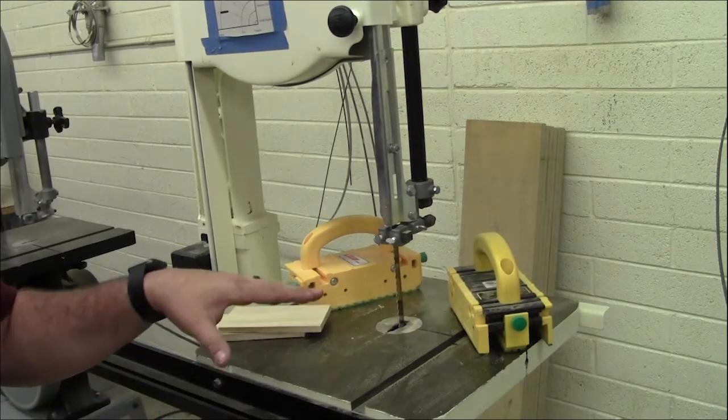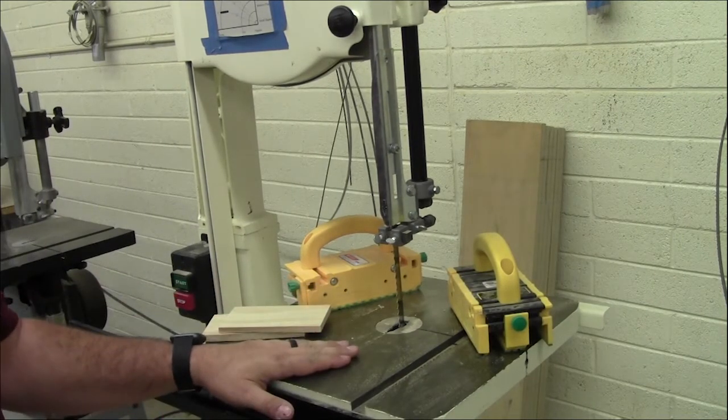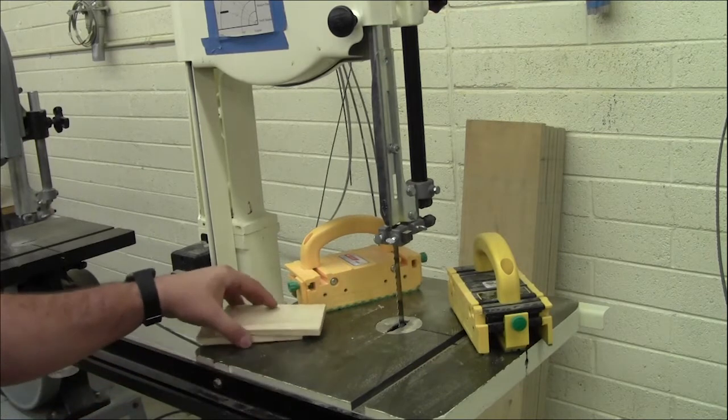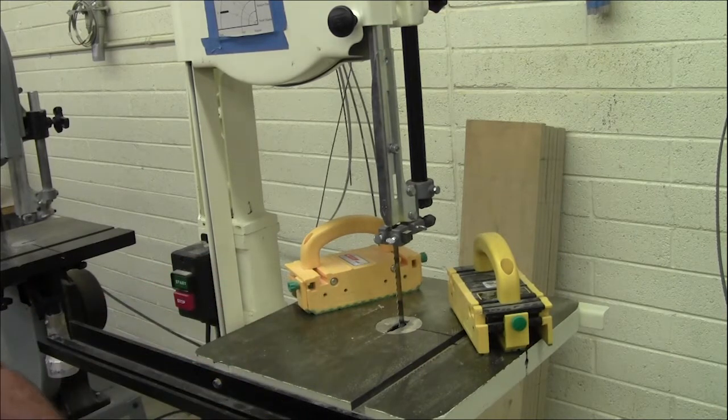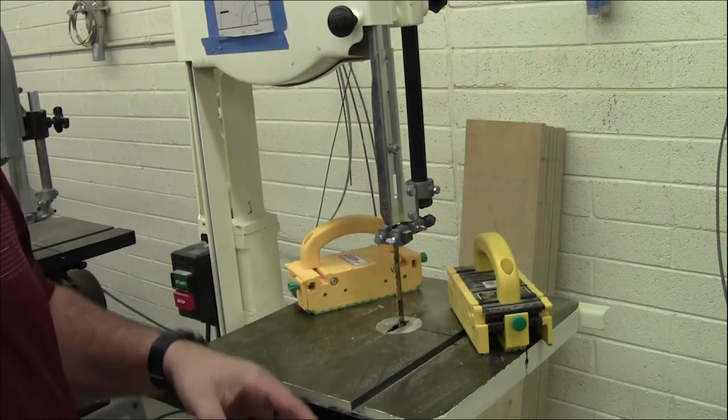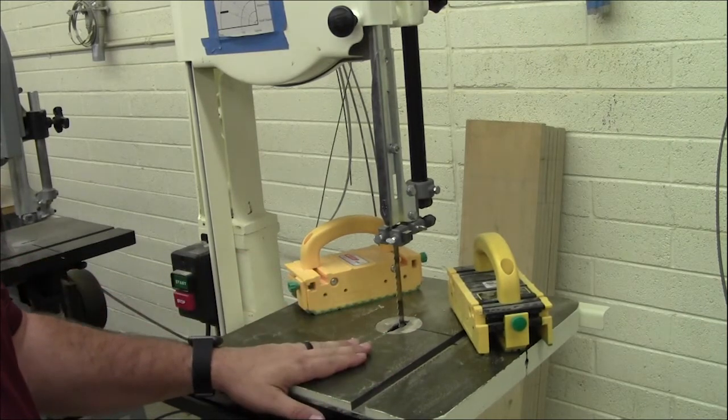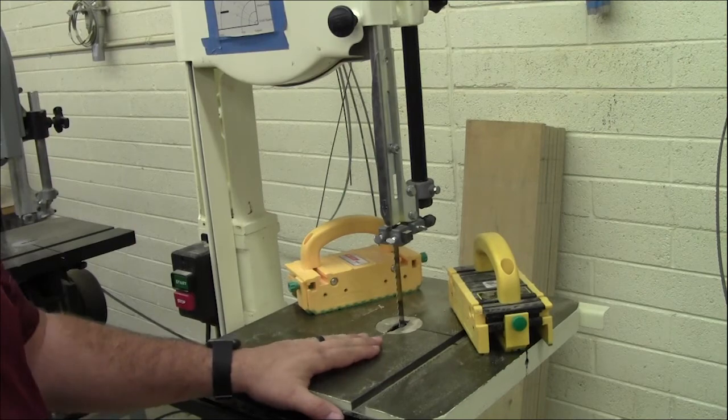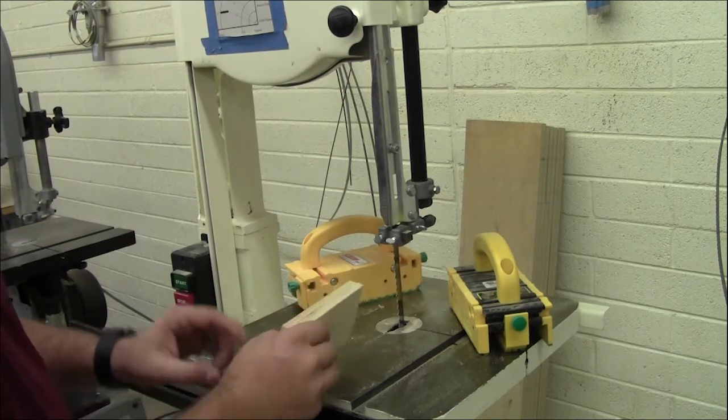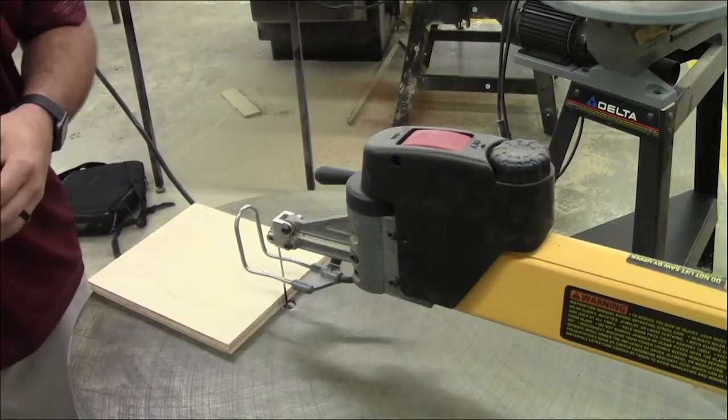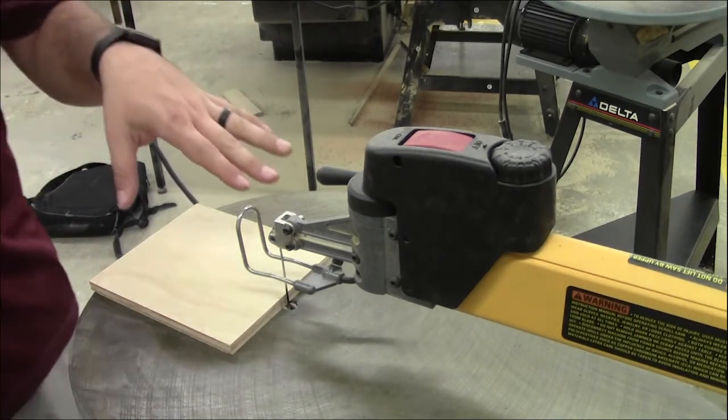One thing that you should have when you're using the bandsaw is that your piece of material should be either S4S or at least planed or jointed. The surface should be smooth so you can run it through either the planer or the jointer. And then if you're doing resawing, you definitely want to have another saw that's similar to the bandsaw is the scroll saw.